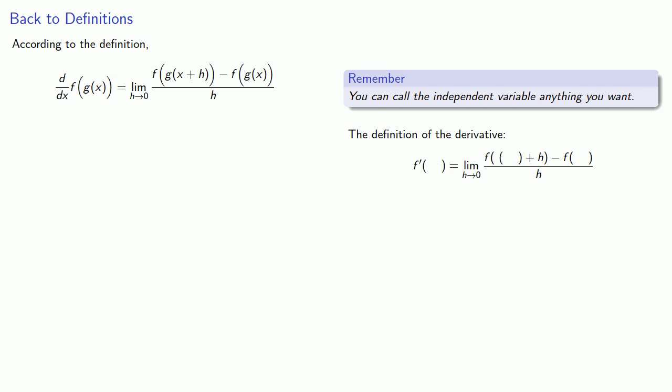But I can drop out this independent variable and leave behind an empty set of parentheses. And again, whatever goes in one set of parentheses has to go in all of them. And so the question is, what do we want inside the set of parentheses? Well, if we look at our definition of the derivative of the composite function, we have a minus f of g of x.